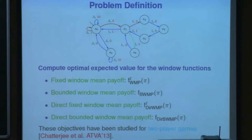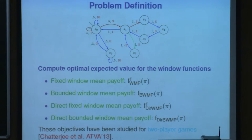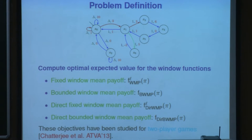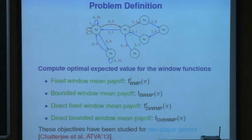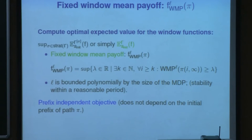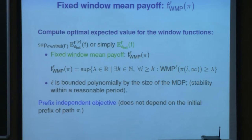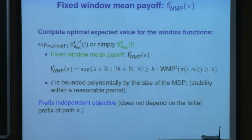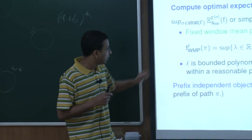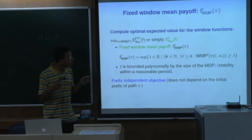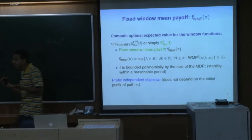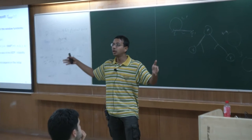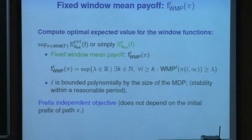With these definitions, I now introduce the problems we study. We consider all the objectives — fixed window mean payoff, bounded window mean payoff, and the direct variants — and we want to compute the optimal expected value for these window functions given an MDP. These problems have been studied in the context of two-player games by Chatterjee et al. We start with the fixed window mean payoff: given an MDP and window length L, we compute the optimal expected value, assuming L is bounded polynomially by the size of the MDP to give a notion of stability within a reasonable period of time.